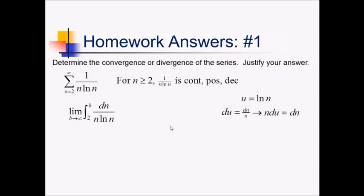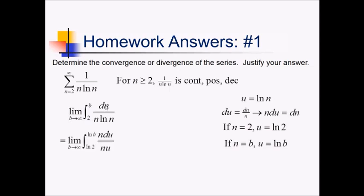So then du, which I have to swap in for dn, that's going to be 1 over n dn. Multiplying to get dn by itself, we're going to have n du. Next, I have to change these limits of integration to u values. If n is 2, then we've got ln(2) for u. If n is b, then u is going to be ln(b). Swapping all that back in, we have the limit as b approaches infinity of the integral from ln(2) to ln(b). Instead of dn, I've got n du, and instead of ln(n), I've got u. These n's are going to cancel. The antiderivative of 1 over u is just ln|u|, evaluated from ln(2) to ln(b).